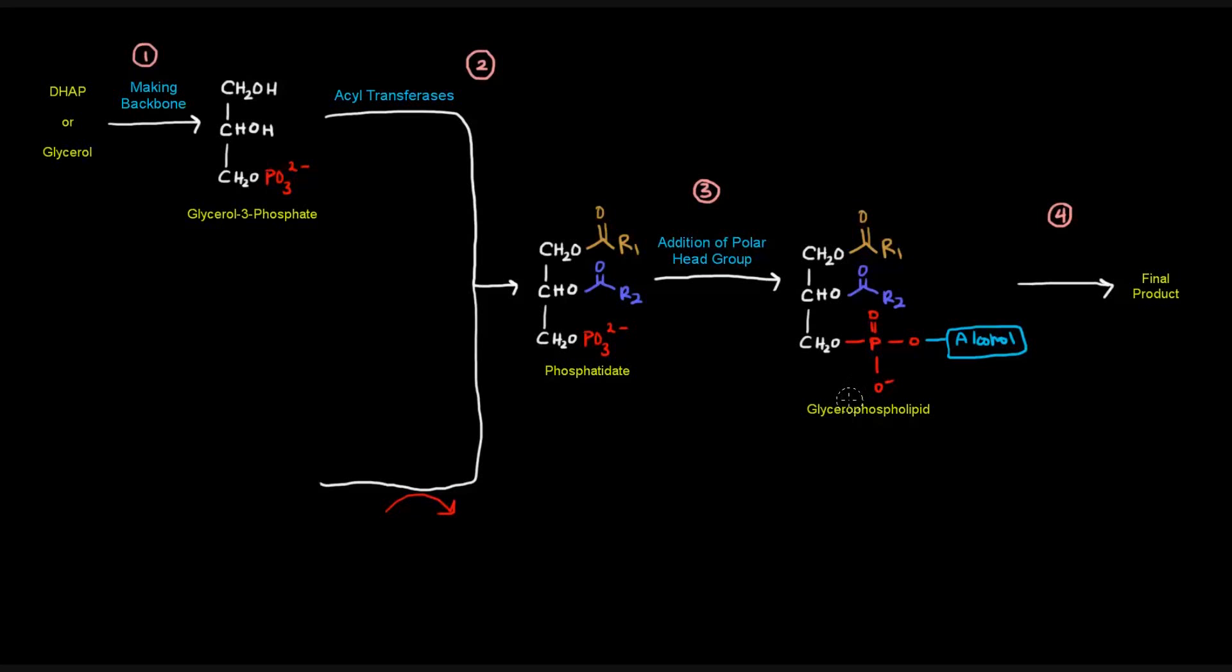And then we basically have a glycerophospholipid. So really, it's only three steps that are absolutely necessary. But there are some cases in which the last step, the modification of that head group, is important to yield the final product, the final glycerophospholipid. So something might be changed slightly. And we'll see more details about that later in the series.